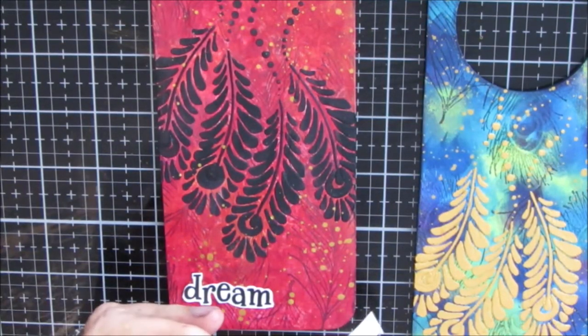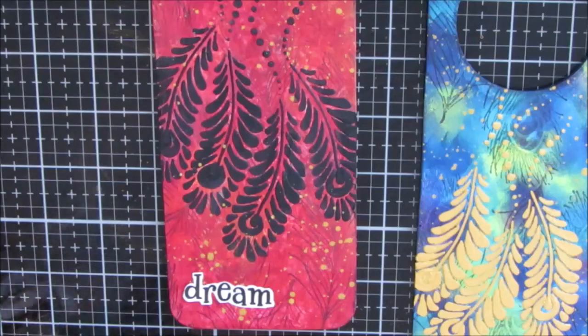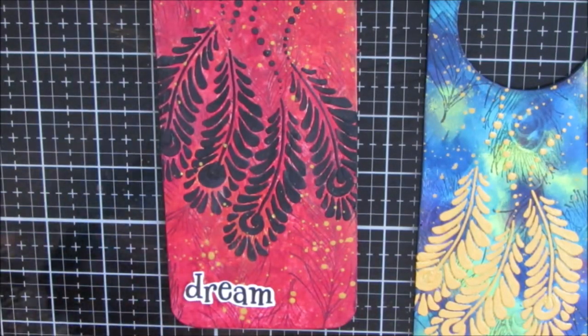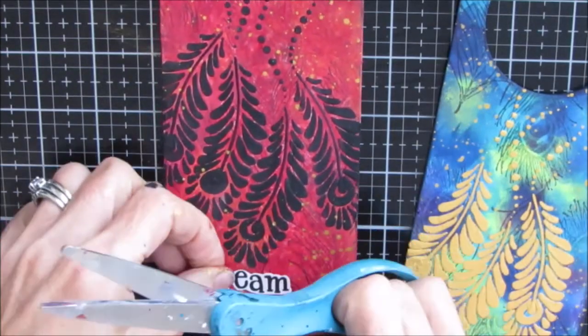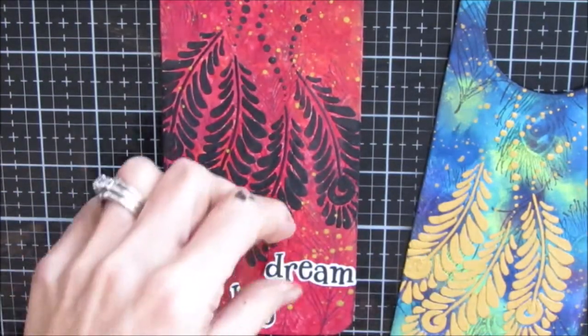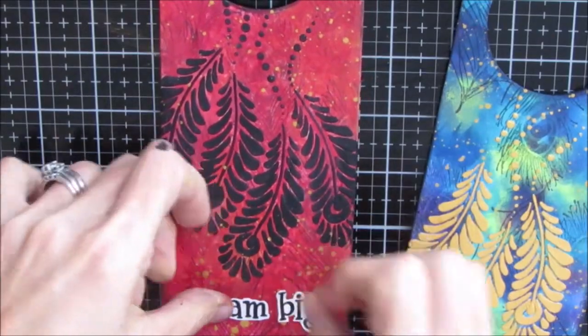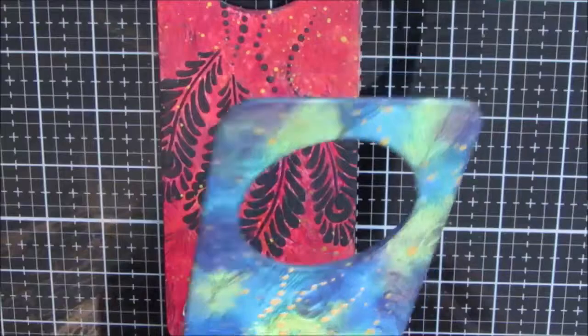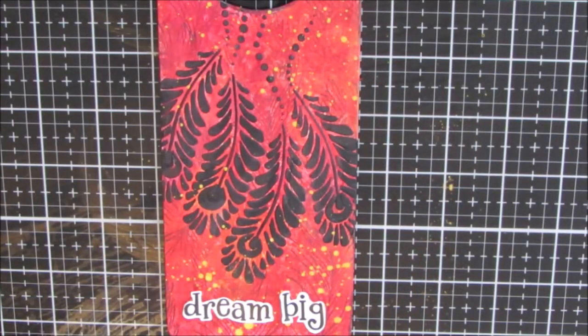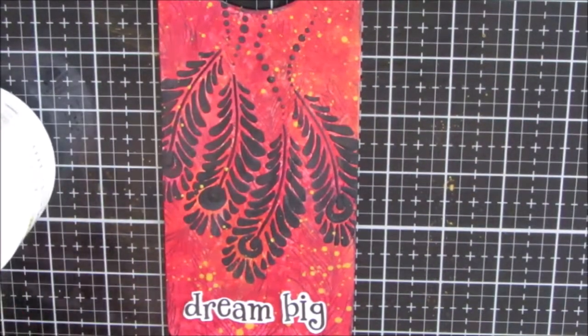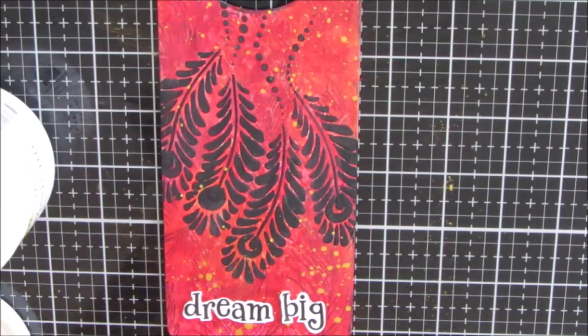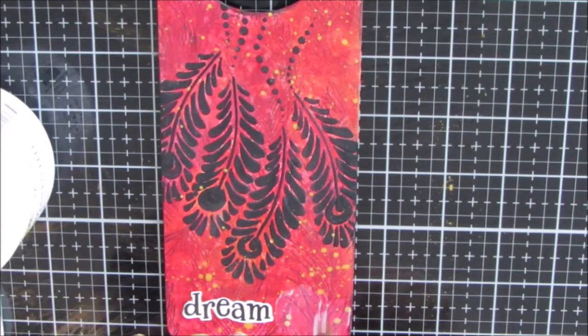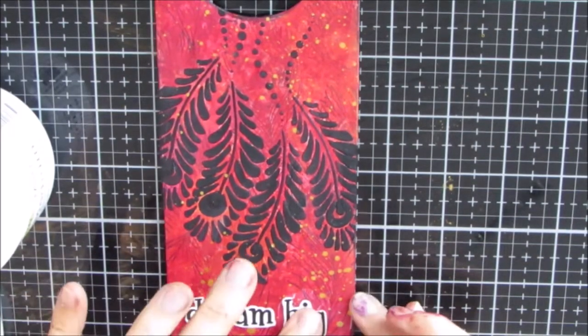And I'm cutting out the words on this one. I'm picking a font that I think goes well with this. So again, dream big. And I have the black that coincides with the black of the feathers. So it all works together. And I'm just gluing this down with some gel medium in the matte finish.